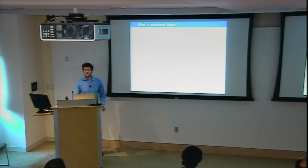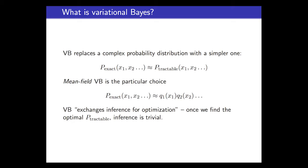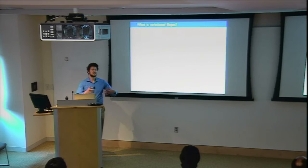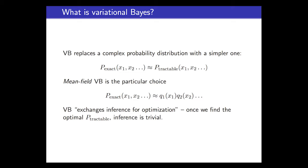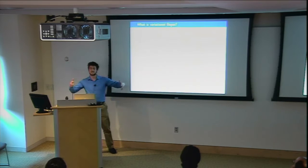The definition of variational inference is really broad. You have some sort of exact, complicated, multivariable probability distribution. It's exact, and that's good, but the problem is it's hard to work with. So you'd like to replace it with something tractable and easier to work with. Any time you're trying to find a distribution that's both tractable and a good approximation to the original one, it's called variational inference. The mean field approximation is the specific type where your approximate distribution is factorized—a product of one factor for each variable, or more generally, a product of factors each containing disjoint subsets of variables.